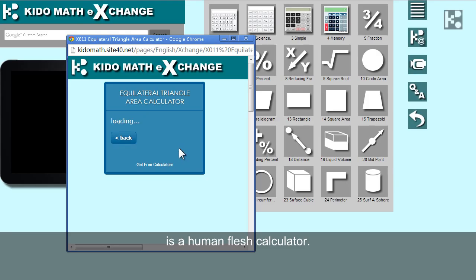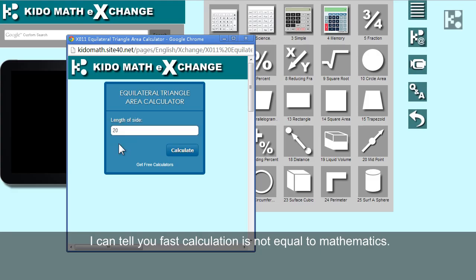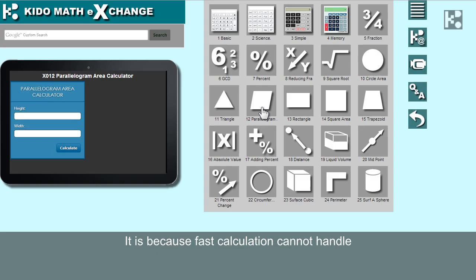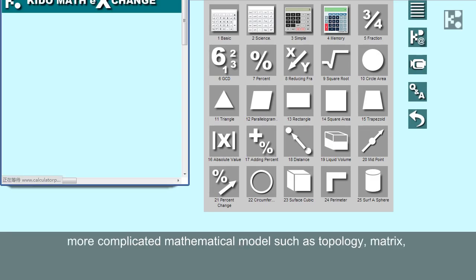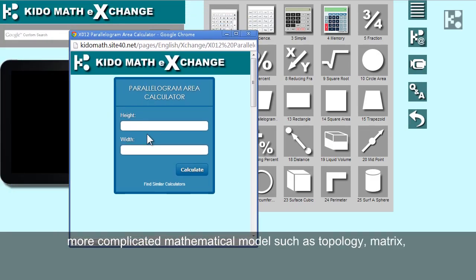I can tell you fast calculation is not equal to mathematics. It is because fast calculation cannot handle more complicated mathematical models such as topology, matrix, statistics, and data analysis.